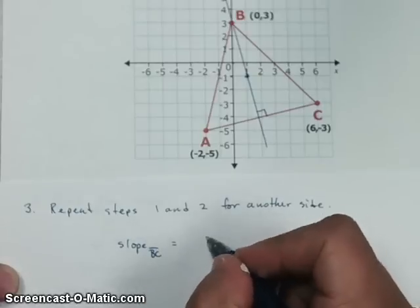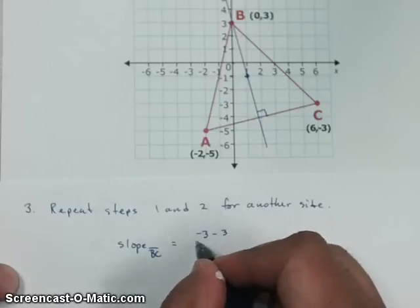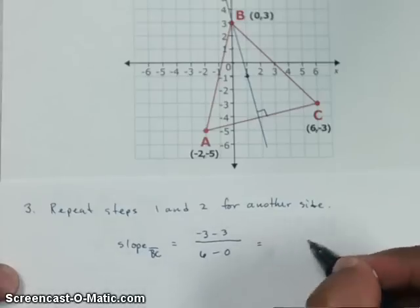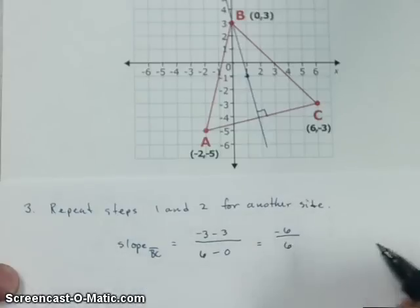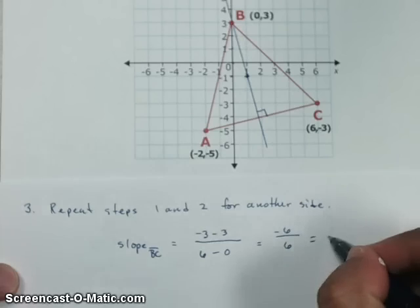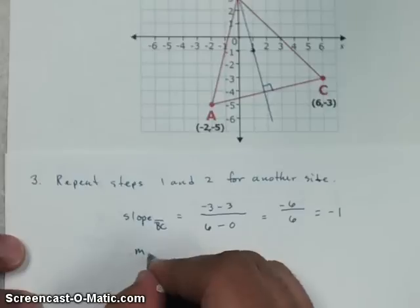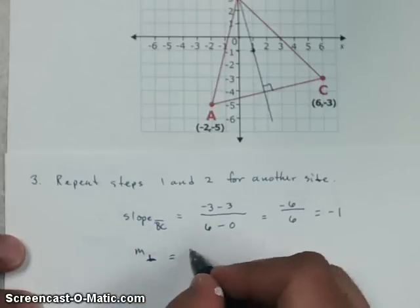So, we're going to get negative 3 minus 3 over 6 minus 0. So, it gives me negative 6 over 6, so this slope is actually a negative 1. Now, remember, yes, I want this slope, but then I want it to go perpendicular to side BC, so we need to do the opposite reciprocal. So, this perpendicular slope is going to be actually a positive 1.